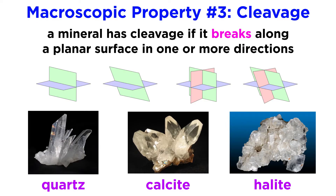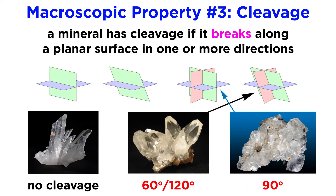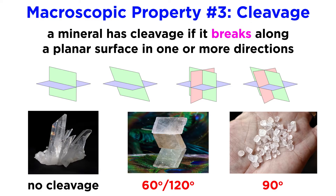The minerals quartz, calcite, and halite often appear very similar in color and luster. The easiest way to tell them apart is to look for cleavage. Quartz has no cleavage, whereas calcite has three directions of cleavage. While both halite and calcite have three directions of cleavage, the cleavage planes of calcite are 60 and 120 degrees apart, versus 90 degrees for halite. If you were to smash halite with a hammer, it would break into tiny cubes. Do the same to calcite, and it would break into tiny rhombohedrons.